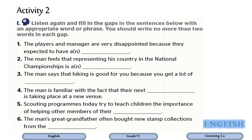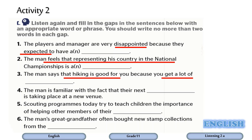Now let's move on to activity C. Listen again and fill in the gaps in the sentences below with an appropriate word or phrase. You should write no more than two words in each gap. Number one: the players and managers are very disappointed because they expected to have celebrations — they predicted something and got disappointed. Number two: the man feels that representing his country in the national championship is a... — here we are looking for his attitude. Number three: the man says that hiking is good because you get a lot of fresh air. Number four: the man is familiar with the fact that their next event is taking place at a new venue. Number five: scouting programs today try to teach children the importance of helping other members of their community. Number six: the man's great-grandfather often bought new stamp collections from the post office.